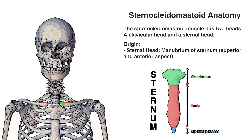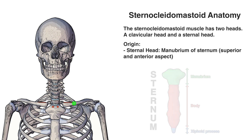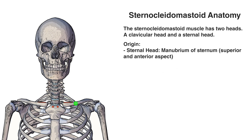Moving on to the clavicular head, we can see that highlighted here in red. That's towards the medial part of the clavicle — medial meaning towards the midline of the body. So we could say it's originating on the medial quarter of the clavicle's superior surface.